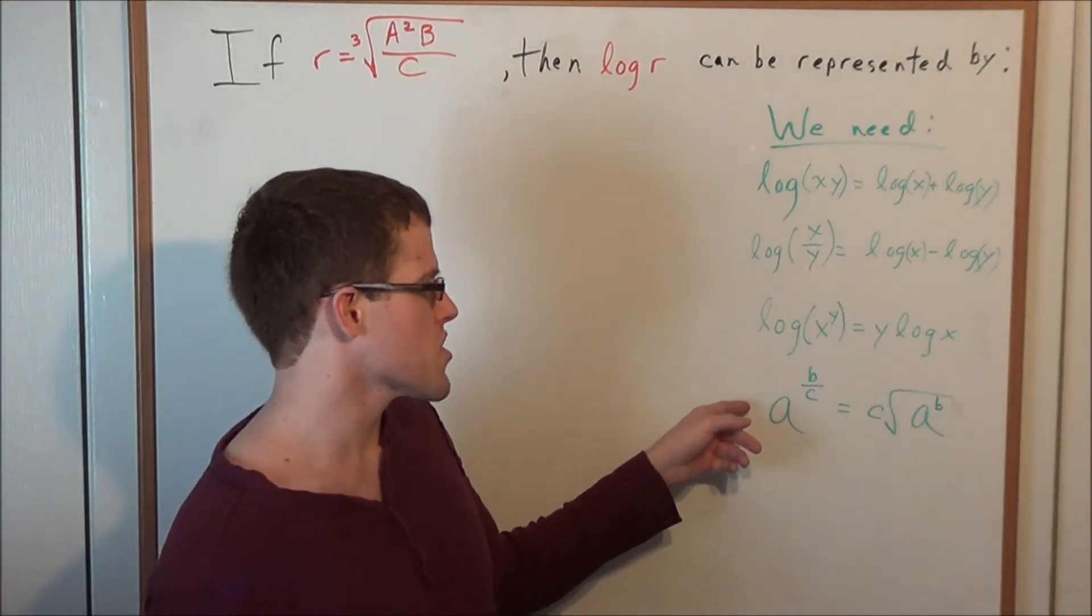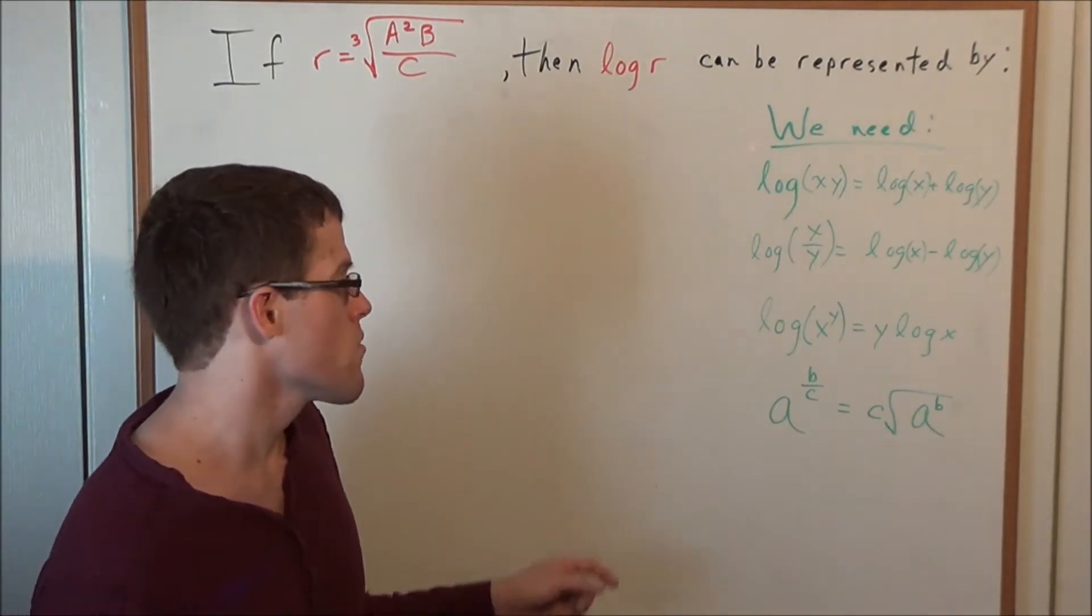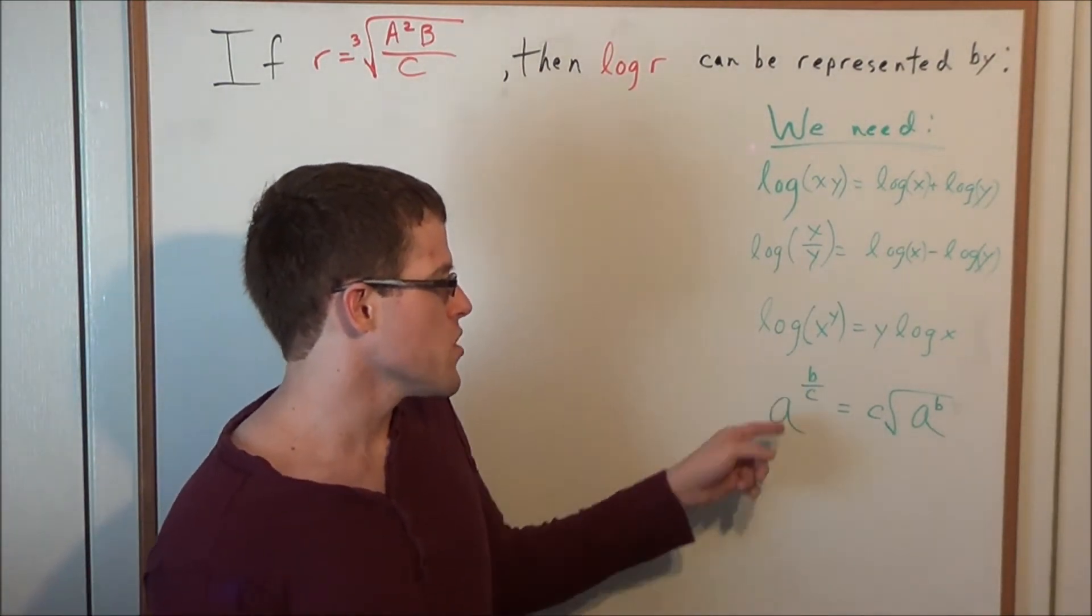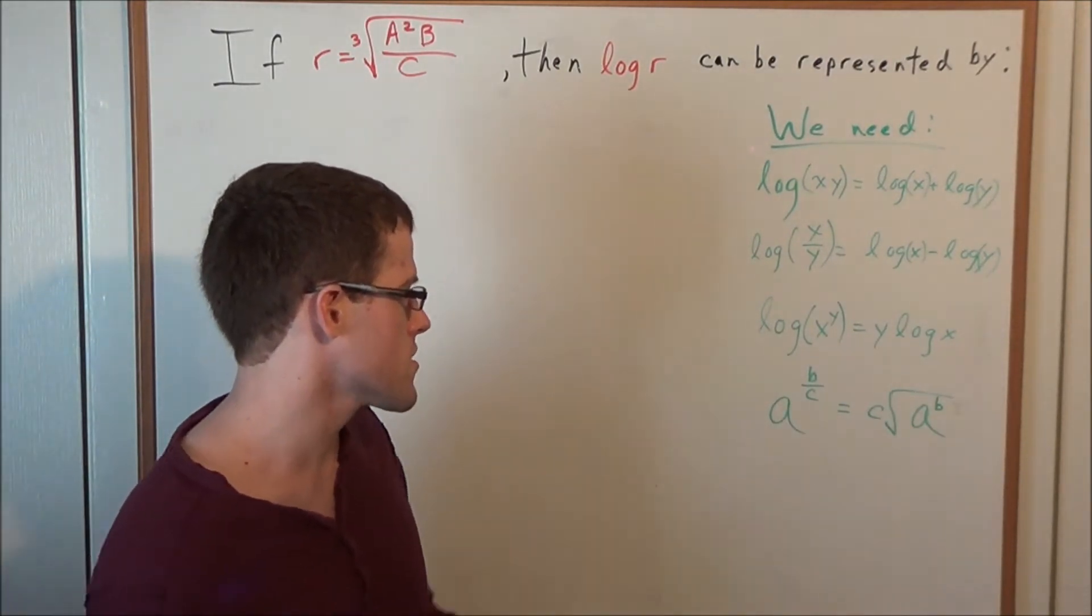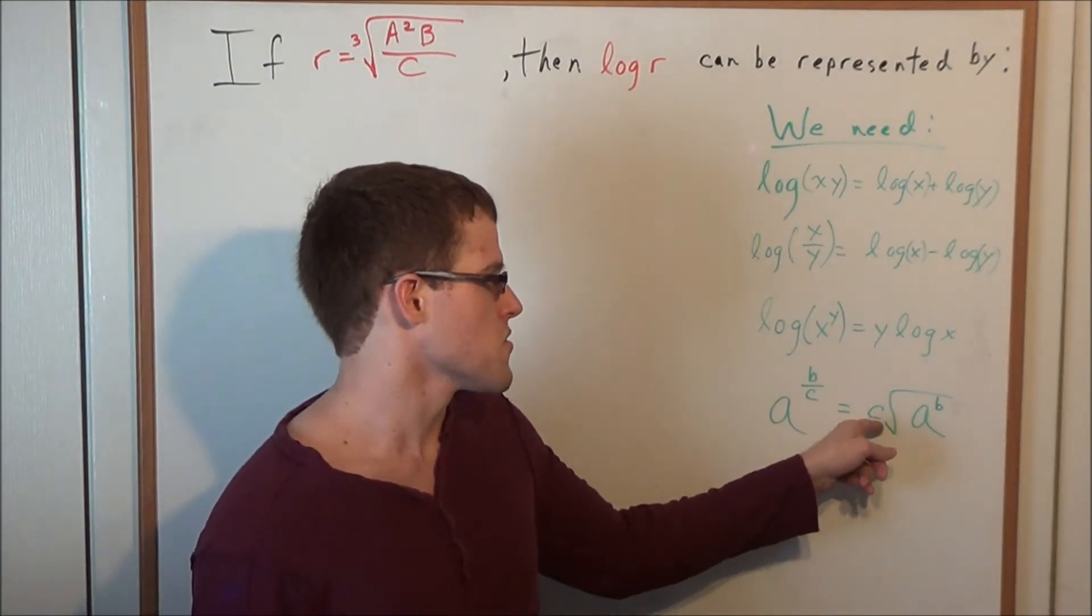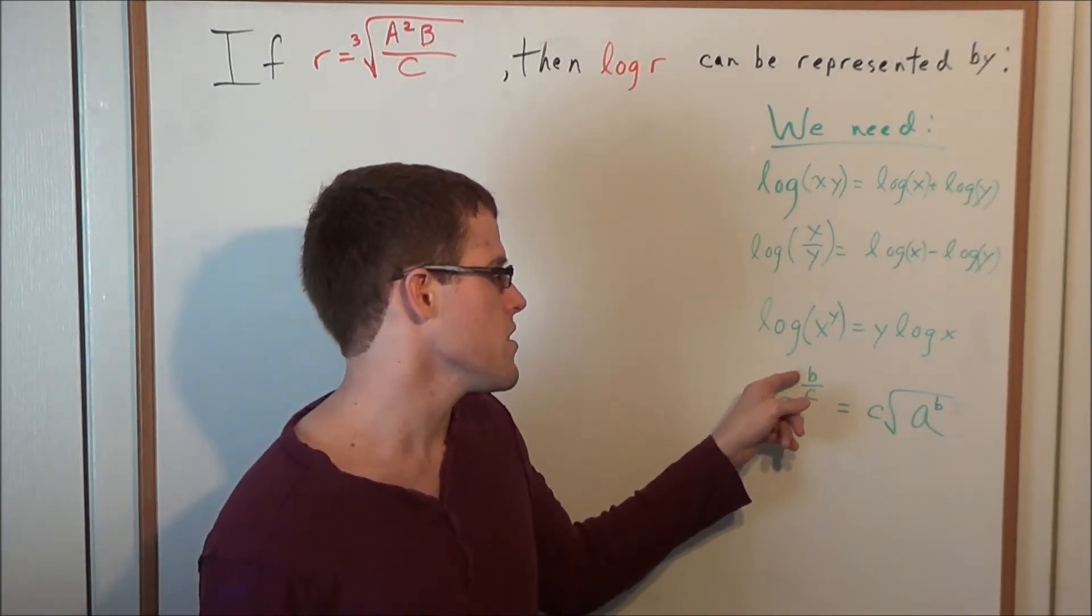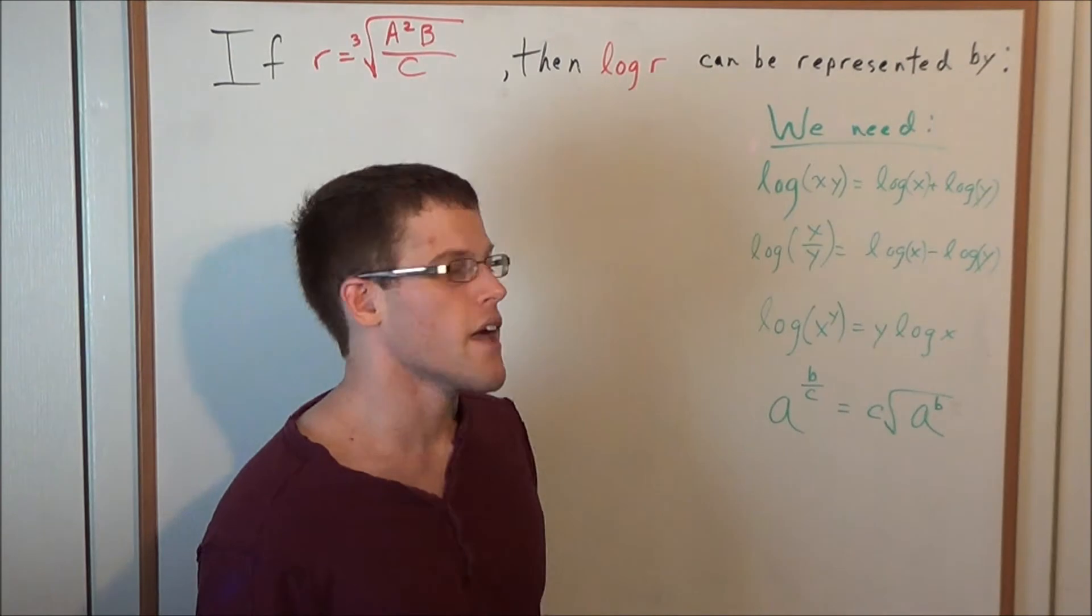And finally, we look at the basic definition of a rational exponent. When we have a raised to the b over c, this is equal to the c root of a to the b power. In some sense, this c in the denominator goes in front of the radical sign and the b in the numerator is what a is getting raised to.